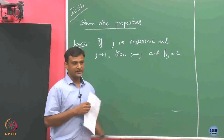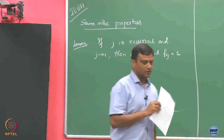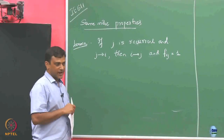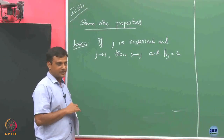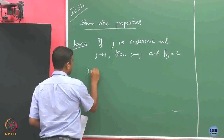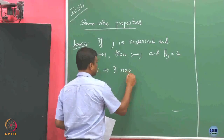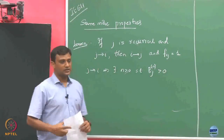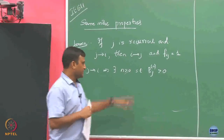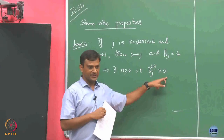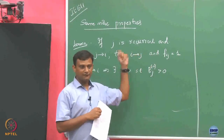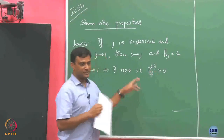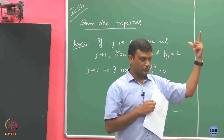Suppose from state J I have reached some other state I in some finite time. Then if I have to come back to that state, it must be the case that from state I, I return to state J. This also implies that F_iJ equals 1. Since J goes to I, there exists some n such that P_iJ(n) is greater than 0. This is telling that at some point n, I am going to reach state J with positive probability, and I can translate this to the first-time visit to state I starting from J.